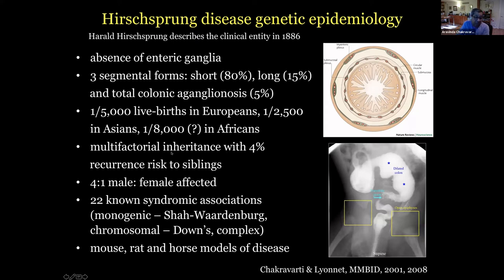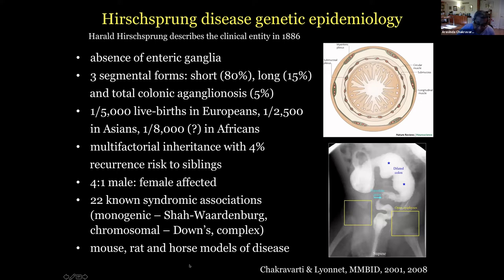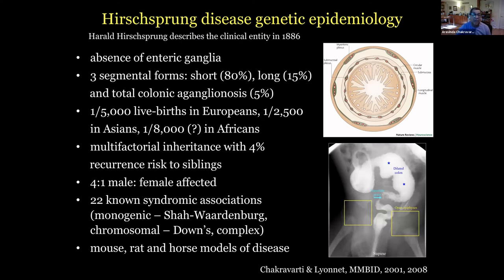It's been known to be multifactorial for a very long time — about a 4% recurrence risk, with an altered sex ratio. What drew me to this subject long ago is that it had significant associations with single-chain traits like Waardenburg syndrome, with chromosomal changes such as Down syndrome. Trisomy 21 individuals have a 50-fold increase in the risk of Hirschsprung's disease, as well as many other complex forms. There were also more or less Mendelian forms of the disease in animal models — in the mouse, the rat, and the horse.